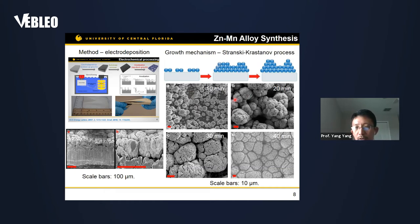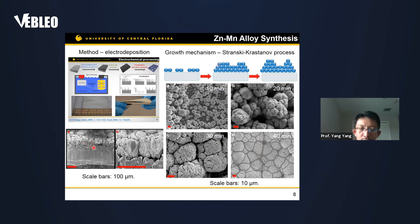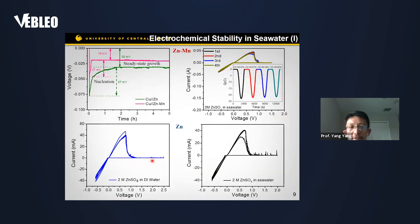As we extend the deposition time, we see first a monolayer fully covering the substrate, and later protrusions form on the surface. Between these protrusions there are dark regions — deep trenches running from the surface to the bottom of the film. Each protrusion is individually aligned on the surface of the substrate, forming the hierarchical structure.